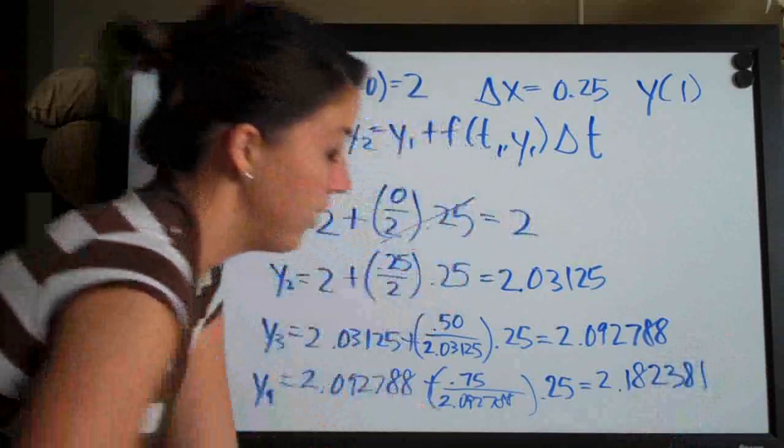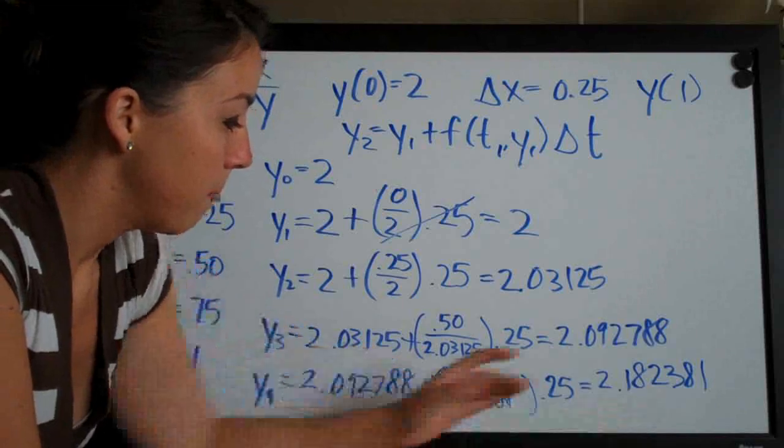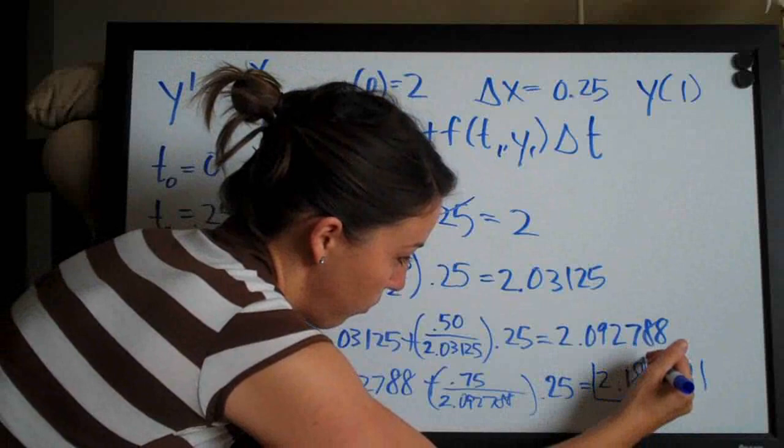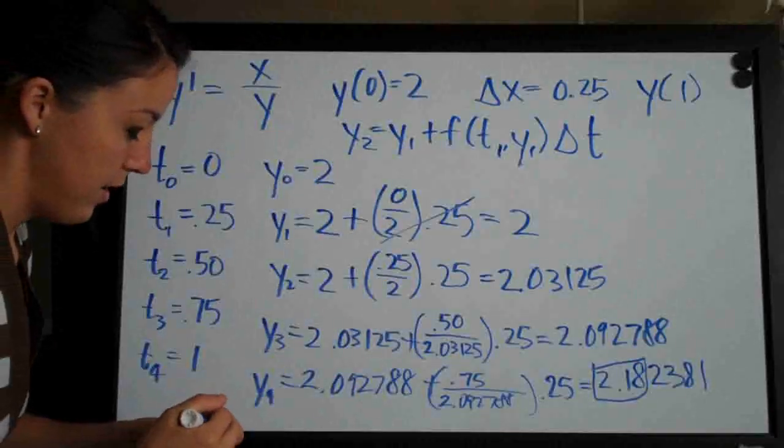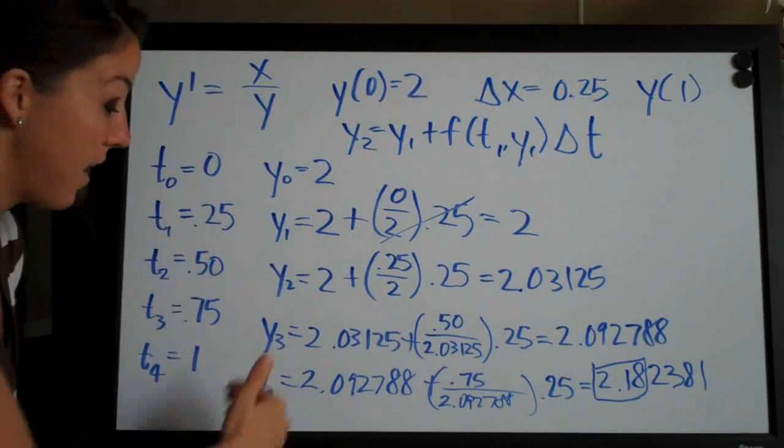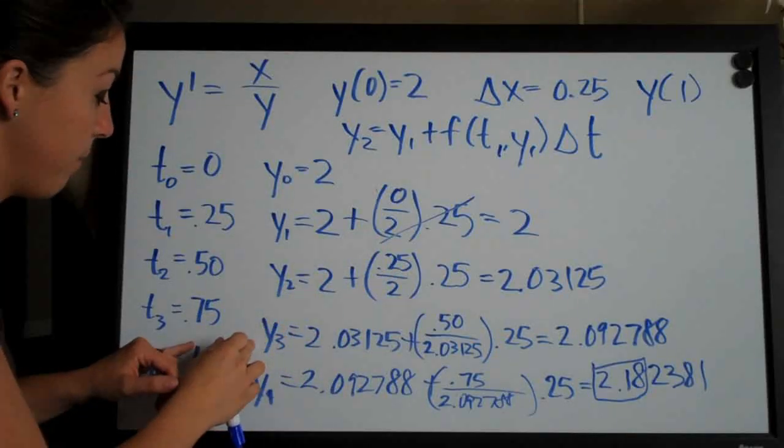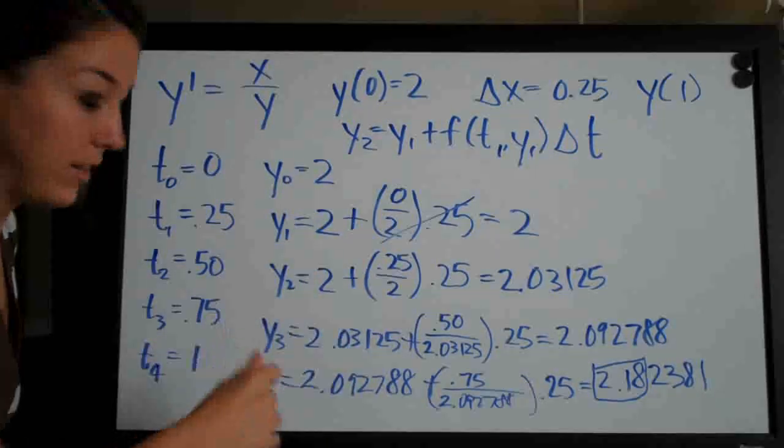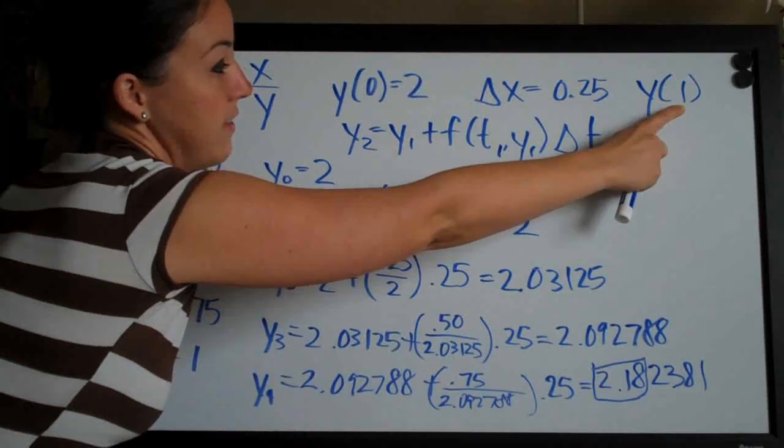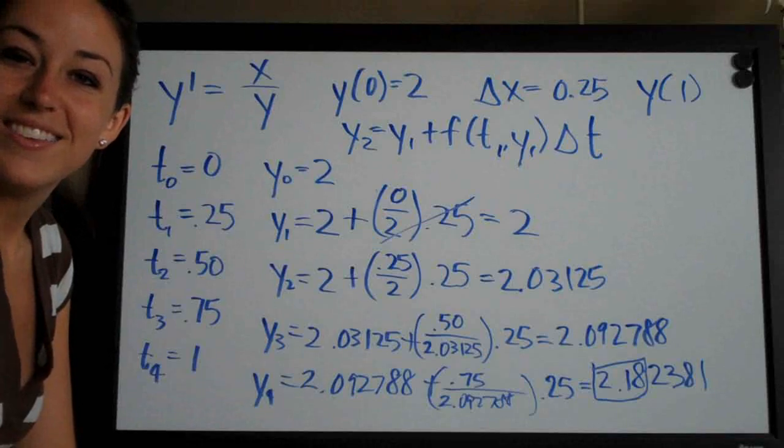So now that we're done, you can round this value because it's your final answer to two decimal places and just get 2.18. But remember to keep all the decimal places until you get to the last answer. So that's it. And even if you have, you know, through t10 and y10, you just keep repeating that process, using the values from the previous row to calculate the next value of y, until you get to your final answer where t is equal to whatever is given to you in the question up here. That's it, guys. See you next time.